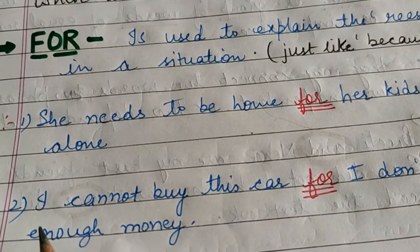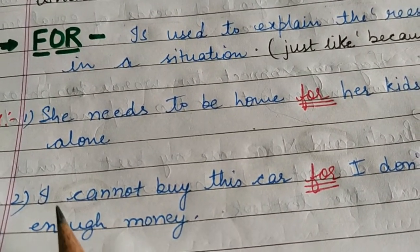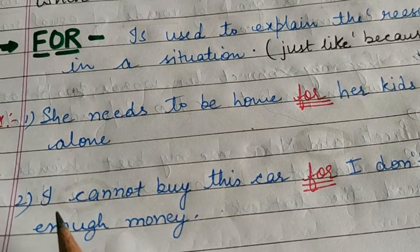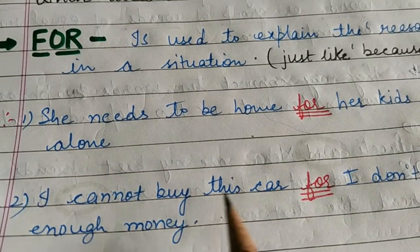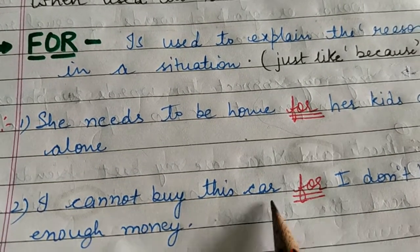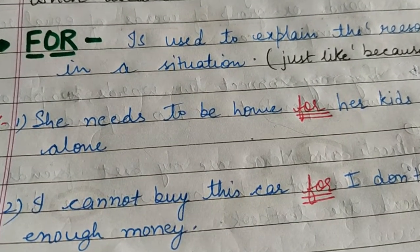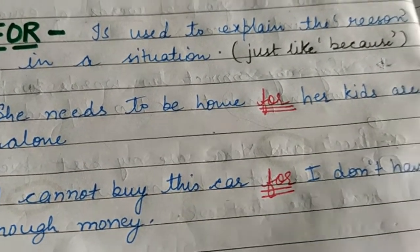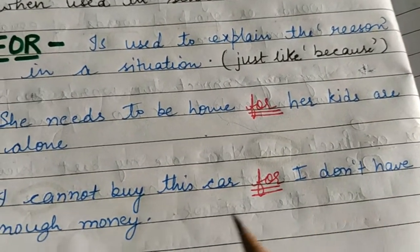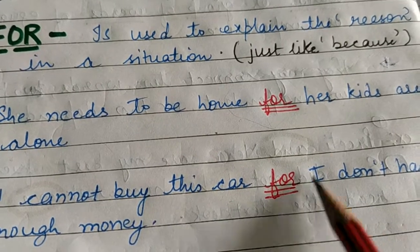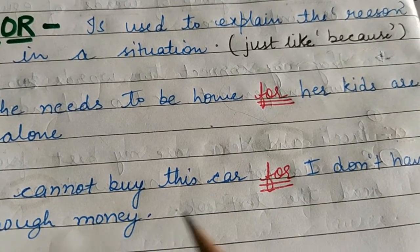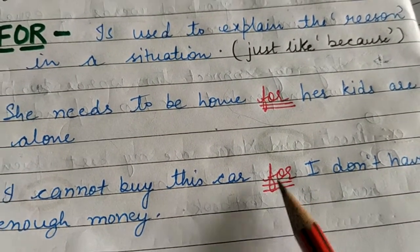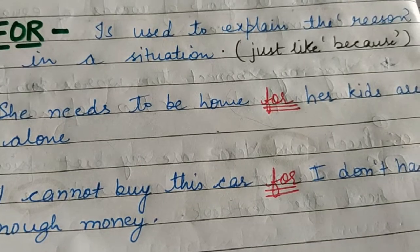Another example: 'I cannot buy this car — for I don't have enough money.' Kyun ki mere paas enough money nahi hai. So here also 'for' is used in the sense of 'because', explaining the reason why I cannot buy the car.